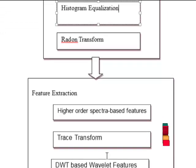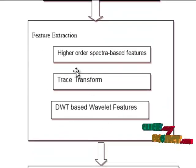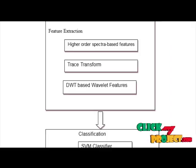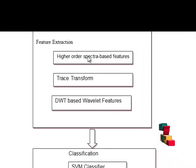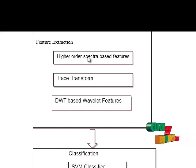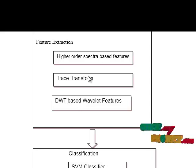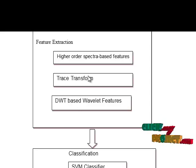Feature extraction is then applied. For feature extraction, we use HOS, Trace Transform, and DWT methods to extract features. HOS is a non-linear method which captures subtle changes in image pixels. HOS invariants are used for shape recognition and to identify different kinds of eye diseases. Trace transform is a generalized approach to the Radon transform and consists of tracing an image with straight lines along certain functionals of the image function.